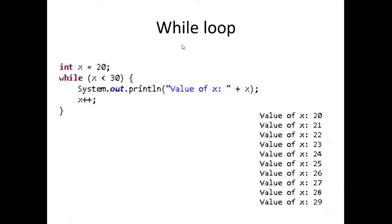Let's get into an actual example. When we're dealing with the while loop, assume that we have this code here: we have int x equals 20, and then right after that we have while x is less than 30, then we're going to do a System.out.println of the value of x plus the value of x, and then after that we're going to increment x by 1.